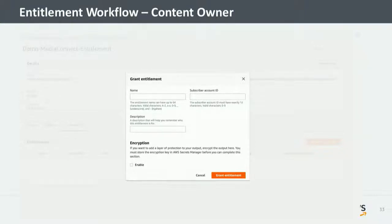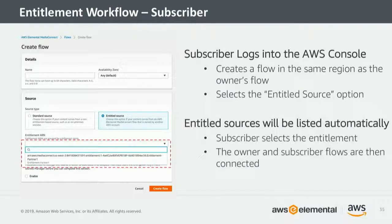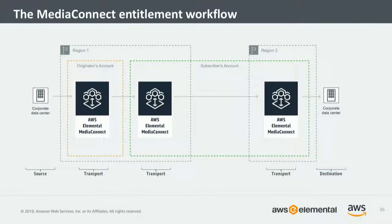Optionally, you can include encryption credentials so that you can make sure this entitlement handover is secure and encrypted. At a later stage — maybe the next day, maybe two weeks later — the subscriber logs into their own account and when they create their flow, they have two fundamental choices: standard and what we call an entitled source. When they choose that entitled source, they will actually see that list — the entitlement that was granted to them in that region will appear. They simply select it, as you can see highlighted by the red box, and that's it. We then connect the dots, and the subscriber is free to build up their own connected workflow.